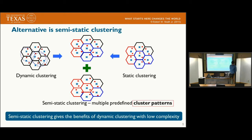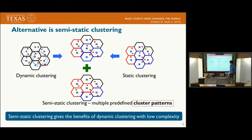In this talk, we focus on semi-static clustering, which is placed between the two main approaches. The main idea of semi-static clustering is to use multiple predefined cluster patterns simultaneously. This pattern and this pattern are simultaneously used, and they will use different resources respectively. Therefore, each user has some opportunity to become a cluster center user.